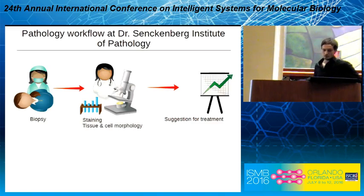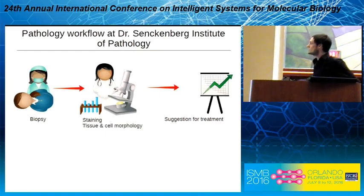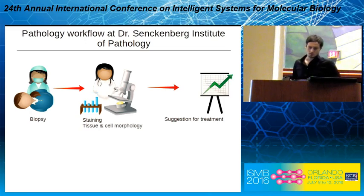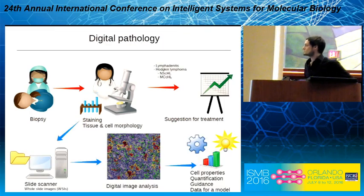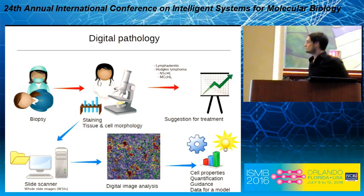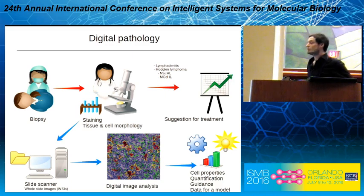Let's first have a look at digital pathology. The usual workflow for something like Hodgkin lymphoma at Sankenberg Institute is that biopsies are taken from patients, and then pathologists stain these and have a look at these images. They will look at the morphology of individual cells as well as the tissue morphology, and then based on this they give a suggestion for treatment. In digital pathology, we use a device known as a slide scanner to produce high resolution slides from glass slides from the microscope, and then you can use these slides for teleconsultation, for getting a second opinion from another pathologist during diagnosis, or for educational purposes.